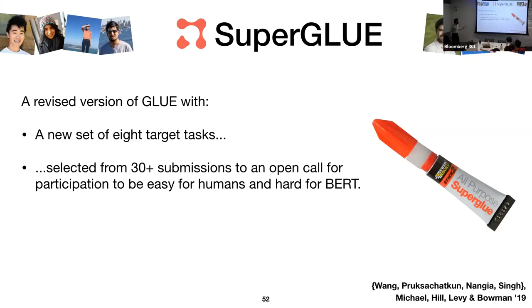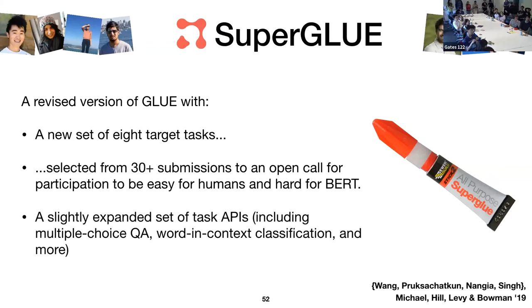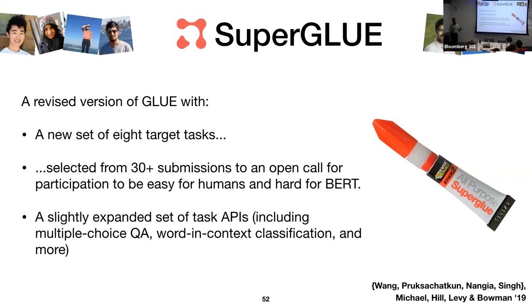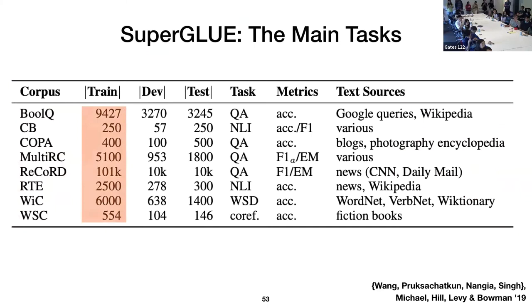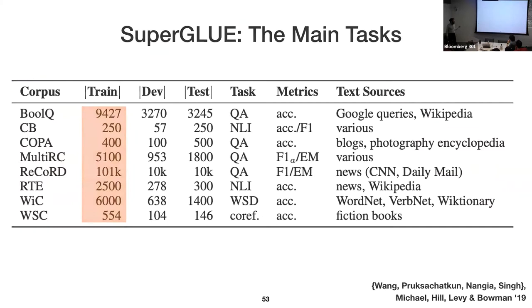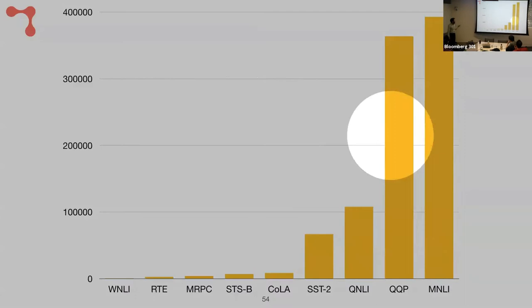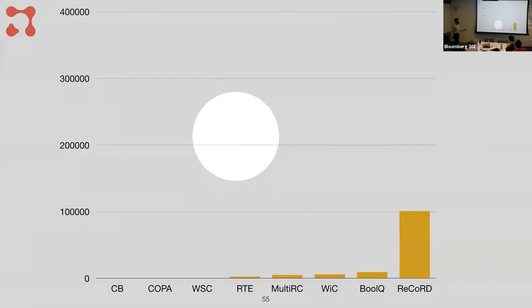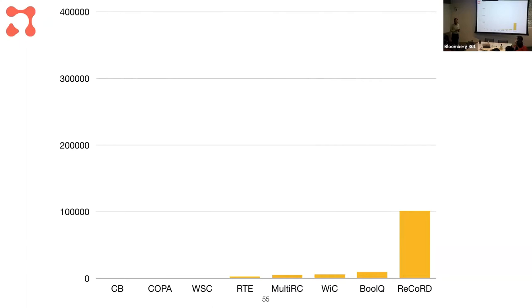To find tasks still not solved by BERT, we even had to expand the task APIs beyond text classification — we included multiple-choice question answering, a word-in-context classification task, and other variants. The SuperGLUE datasets tend to be smaller: the range of sizes for GLUE versus SuperGLUE is quite different. We have only one task with around 100,000 examples, and three of them have under 1,000 training examples. That wasn't intentional, but it's something we expected — getting fine-tuning right with very small target-task training sets is quite difficult.